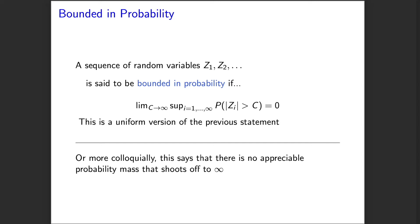This is a subtle statement, but intuitively what it's saying is that there can't be any appreciable probability mass that shoots off to infinity as we look further and further in our sequence — all of that probability mass has to be well-bounded. It doesn't necessarily need to look like it's concentrating on zero, but it needs to not shoot off to the extremes.